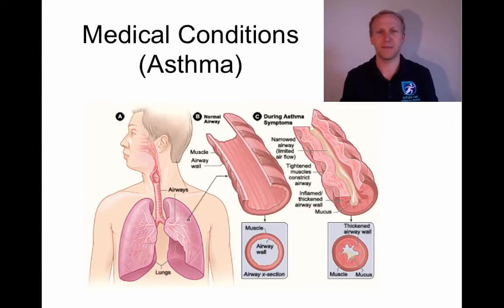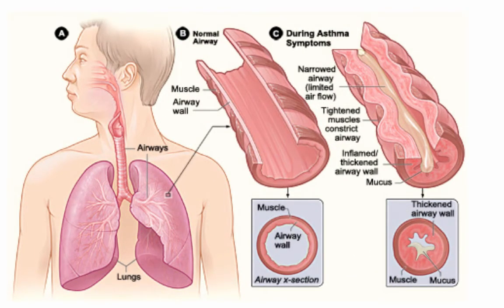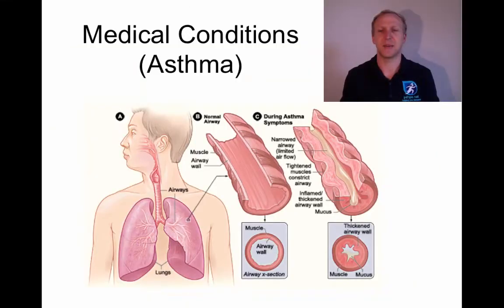The first medical condition we need to understand is asthma. Asthma is a medical condition of the airways. A normal airway is nice and open, whereas in people with asthma, once a trigger occurs — whether that be pollen or even exercise — the walls of the bronchi swell up, become thick, and mucus starts to excrete into the airway, making it very difficult to breathe.